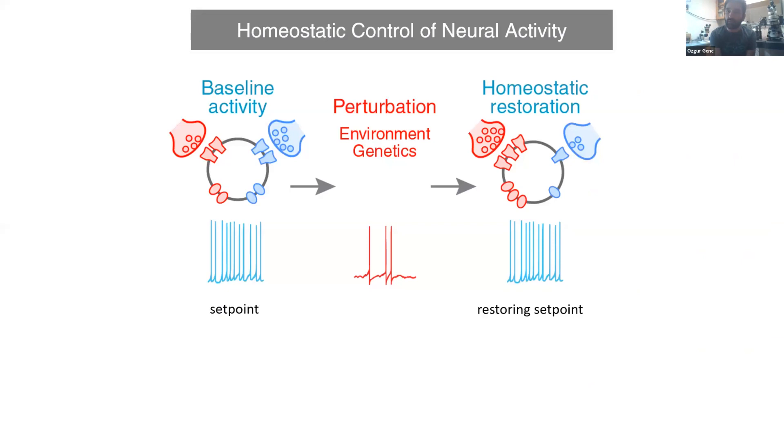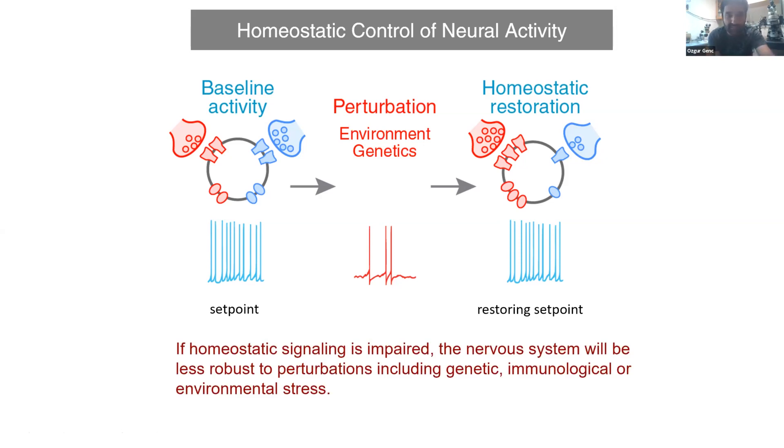I'll give you a quick overview of how I define homeostatic plasticity. A neuron has a certain set point of activity, which can be exemplified as firing rate. When the system sees a perturbation, that can be environmental or genetic, this firing rate can go down transiently. But in the continuous presence of this perturbation, the system can restore back to its set point. This is basically how neural activity can be controlled homeostatically. This homeostatic signaling system is very important for brain function.